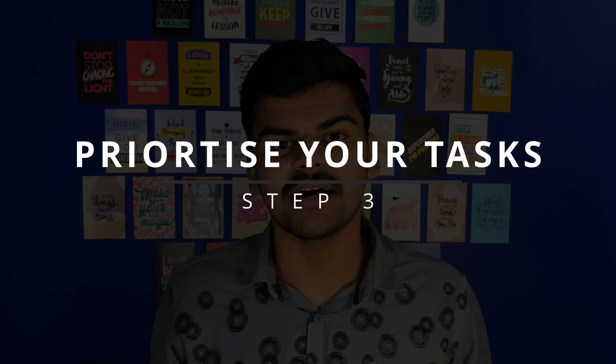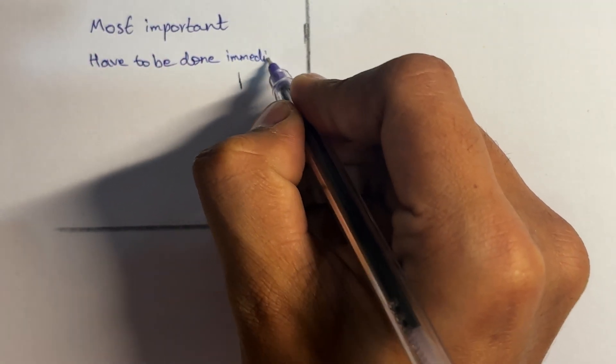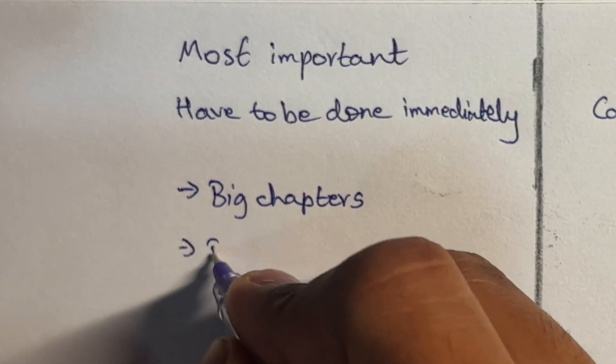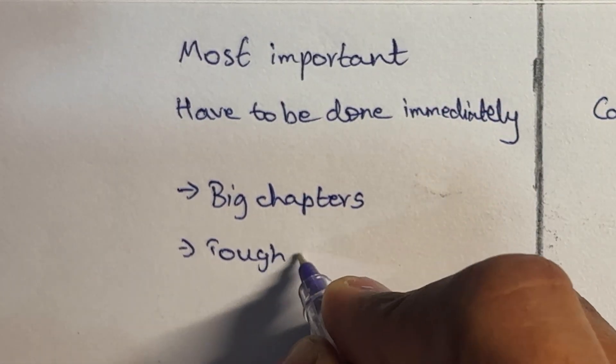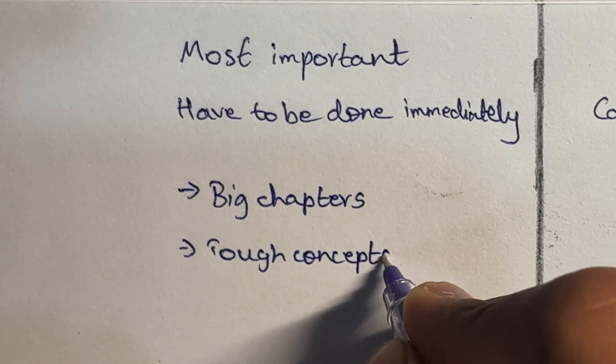Step 3 is to prioritize your tasks. For this I have a personal favorite method — just take a paper and draw a plus symbol. Now we have 4 different boxes. The first box on the top left is going to be tasks which are most important and have to be immediately done. Examples are hard tasks which you feel are very complicated — for me it can be reading anatomy or pathology, and for you if you are writing NEET or JEE it can be doing a big chapter of physics and solving its MCQs.